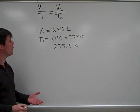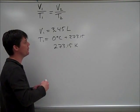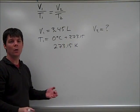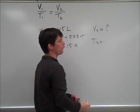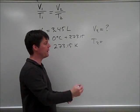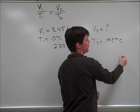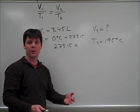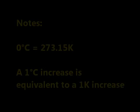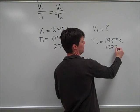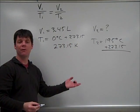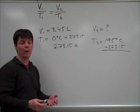Now the other information that we're provided, V2 is what we're trying to find. So that is our unknown variable. We also know T2, because this is 195 Celsius, again we'll need to add 273.15 in order to convert this to Kelvin. So this will work out to give us a final temperature of 468.15 Kelvin.